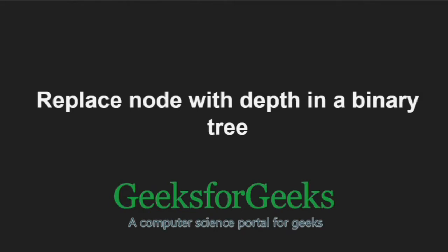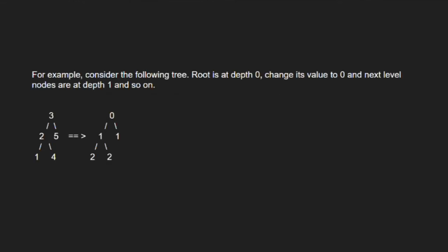First, let us take an example. The root is at depth 0, so we change its value to 0, and next level nodes are at depth 1, and so on.